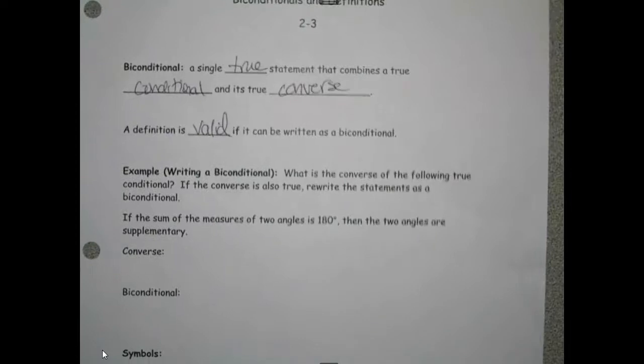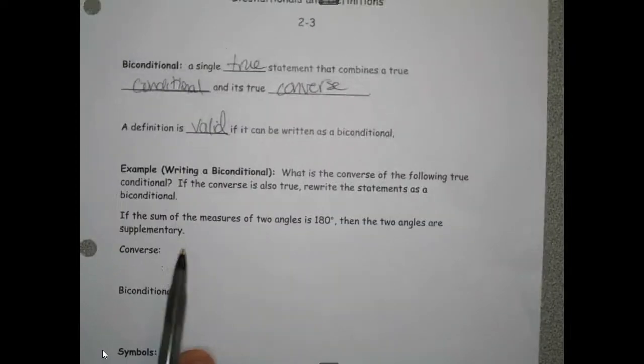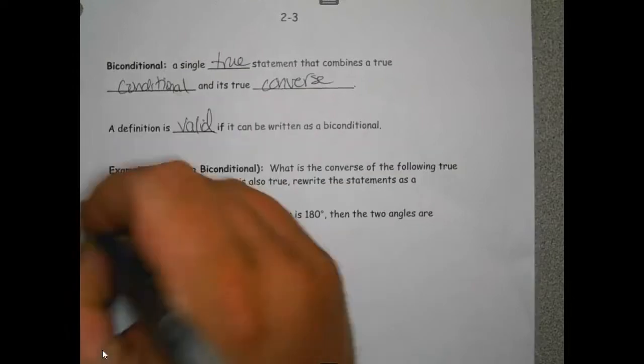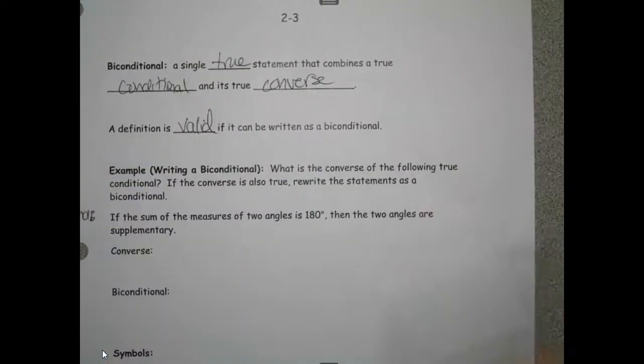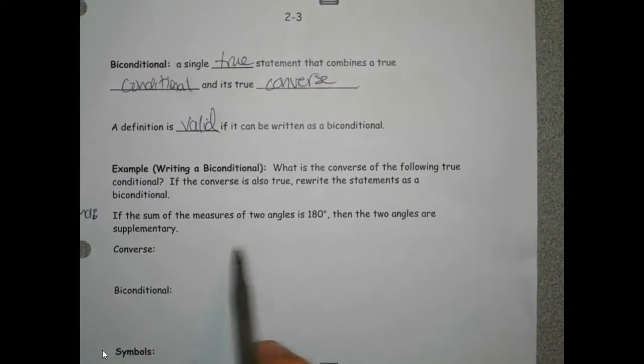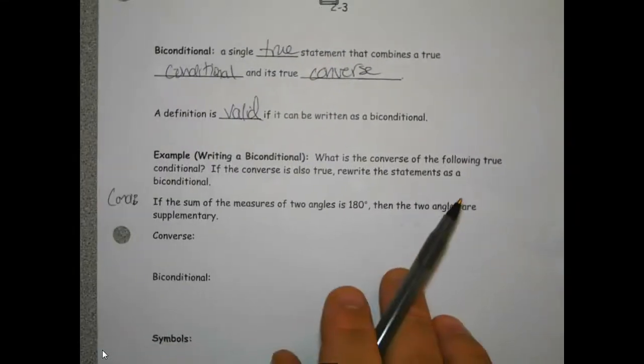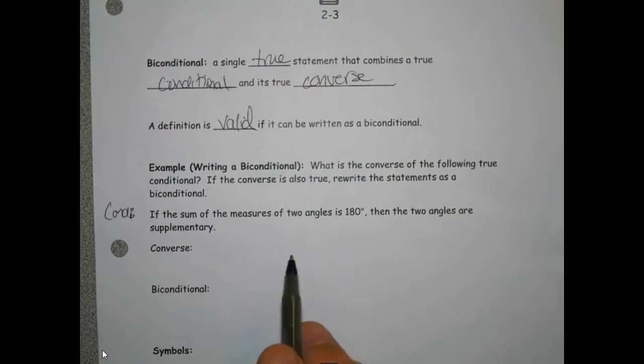So let's look at one that is a true biconditional. The first statement, and this is your conditional, is: if the sum of the measures of two angles is 180, then the two angles are supplementary. So let's write the converse of that.